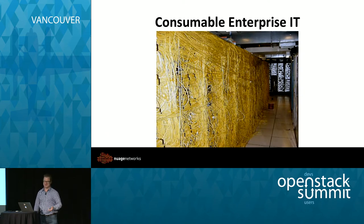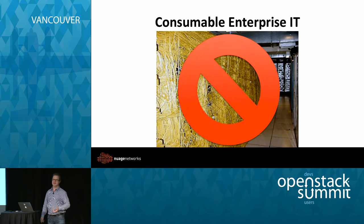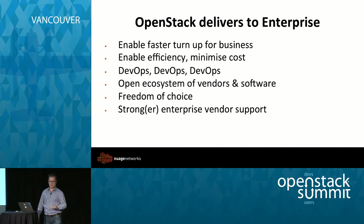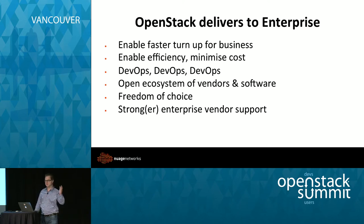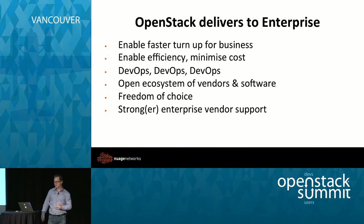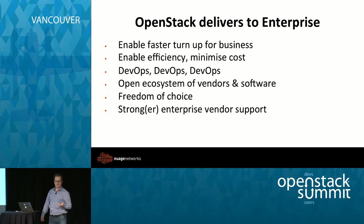This is really the complexity we see in data centres. We need to eliminate that to enable consumption as a service. What OpenStack delivers to the enterprise: faster turn-up for the business, efficiency — it minimises cost, we see that with examples like PayPal. DevOps, a single set of APIs enabling short cycles across the business and not just within IT, but DevOps applications being implemented out in other divisions as well. An open ecosystem of vendors, freedom of choice, and much stronger enterprise support from vendors — we see this with distros from Red Hat, Canonical, etc.